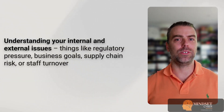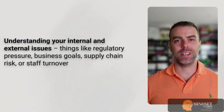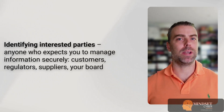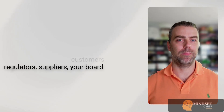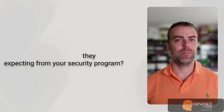ISO 27001 also asks you to define your organisational context, covered in clause 4, which involves three things: understanding your internal and external issues — things like regulatory pressure, business goals, supply chain risk, and staff turnover; identifying interested parties — anyone who expects you to manage your information securely, such as customers, regulators, suppliers, or your board; and figuring out their relevant requirements. All of these need to feed into how you structure your ISMS and how you explain it in your documentation.